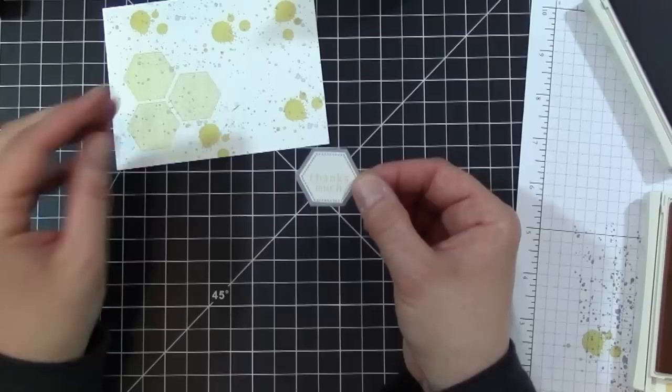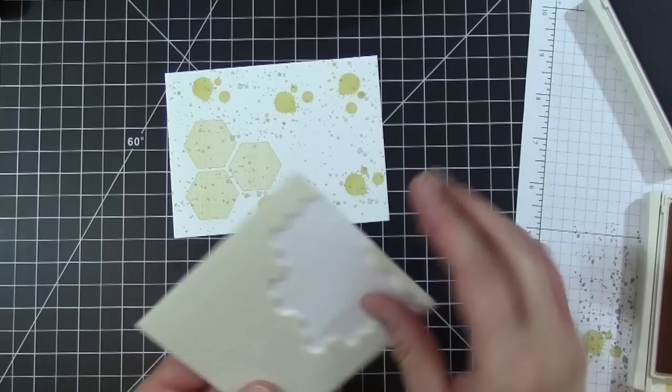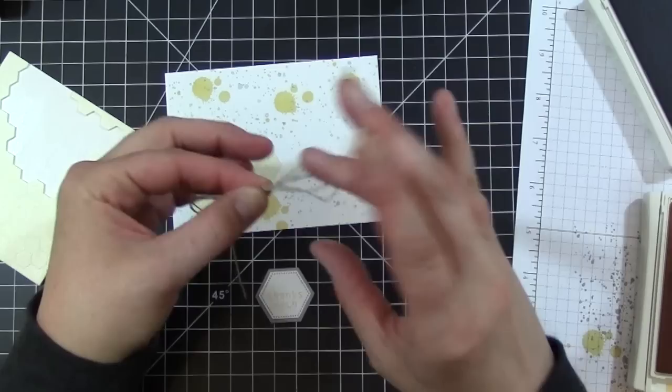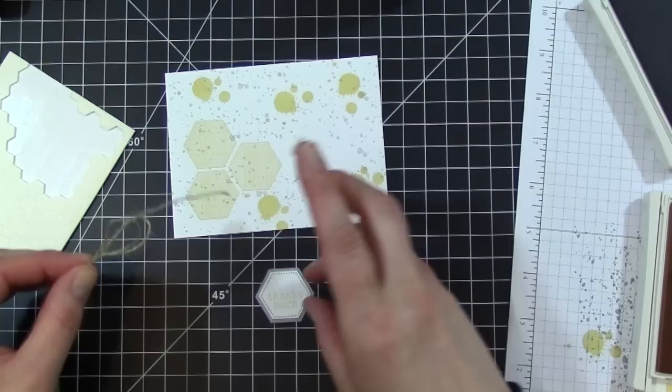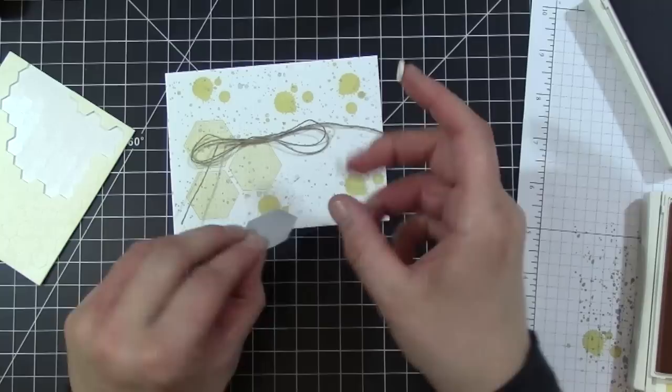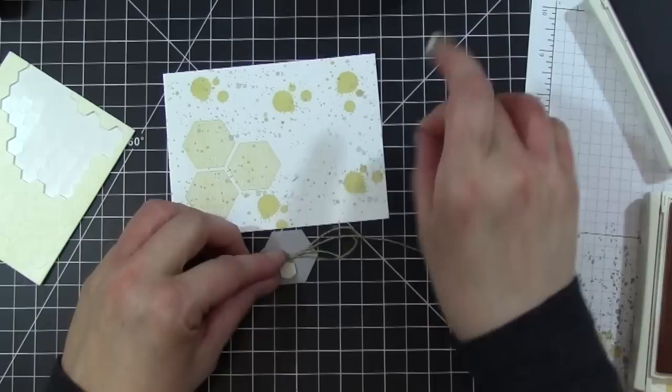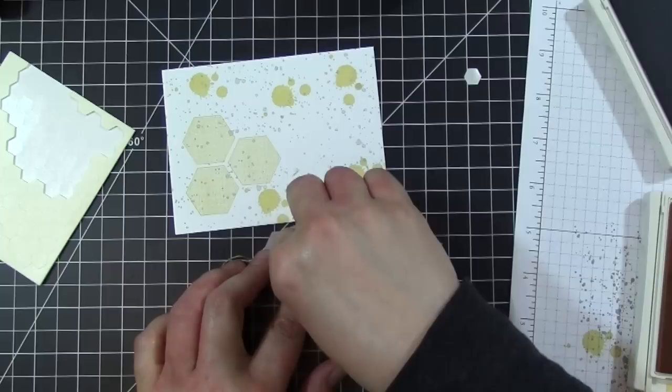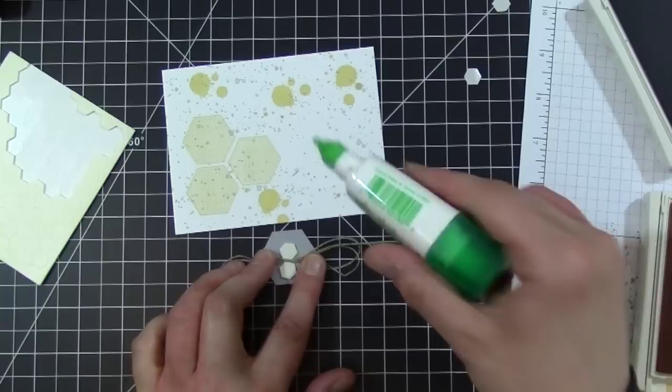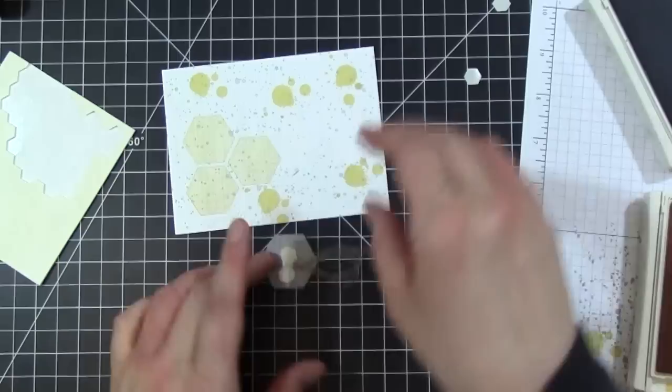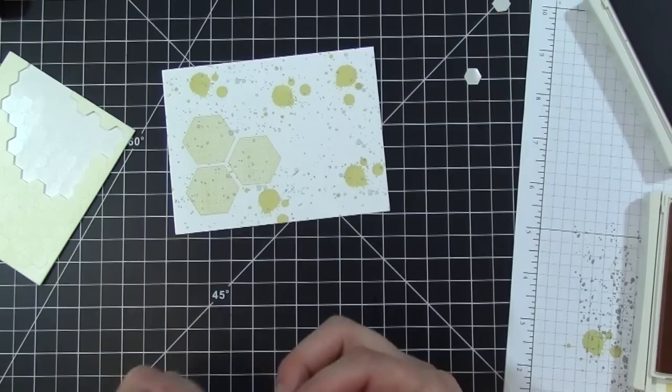I'm going to grab my dimensionals. I have a piece of linen thread that I wrapped into a bow shape and that is going to go behind my hexagon. I'm going to take my twine and stick it in between the two pieces of foam. I'm going to grab a little Tombow just to make sure that's stuck down there good. Then we'll just go ahead and put that right there.